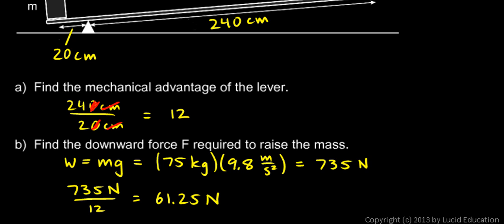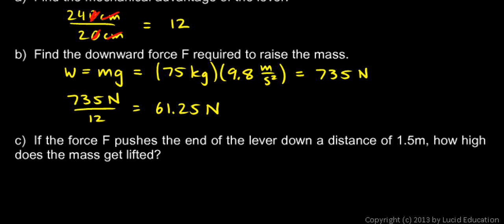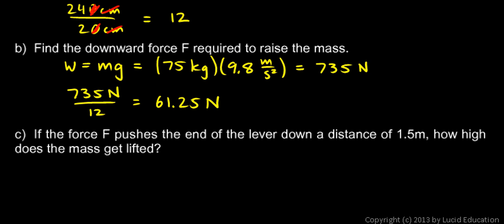It ends up being 61.25 newtons. That's how much downward force we have to exert on the lever to get an output of 735 newtons upward. Then question C: if the force pushes the end of the lever down a distance of 1.5 meters, how high does the mass get lifted?